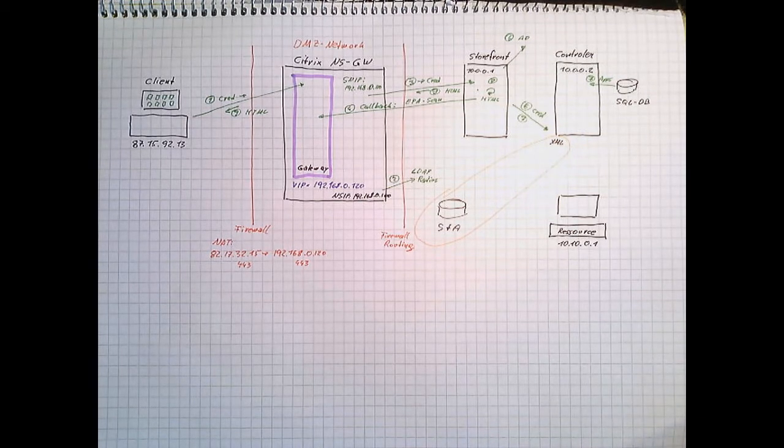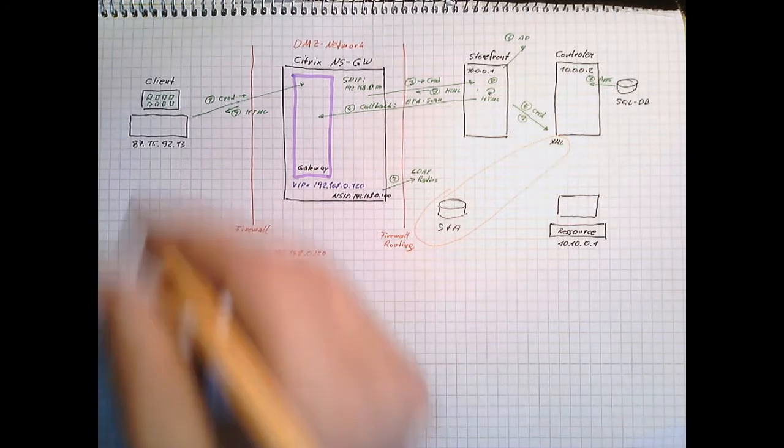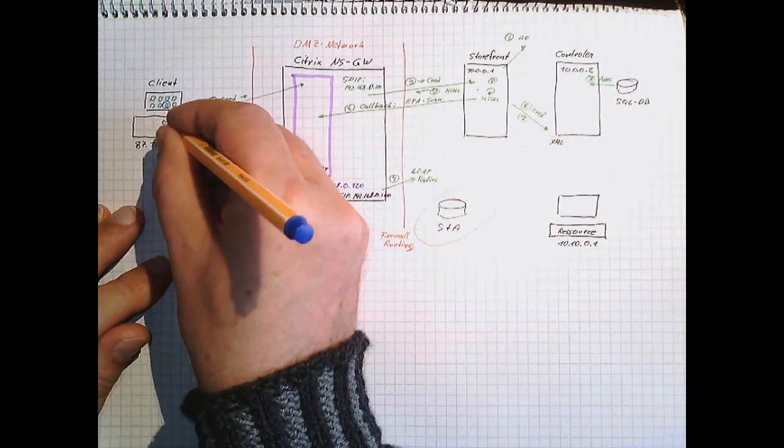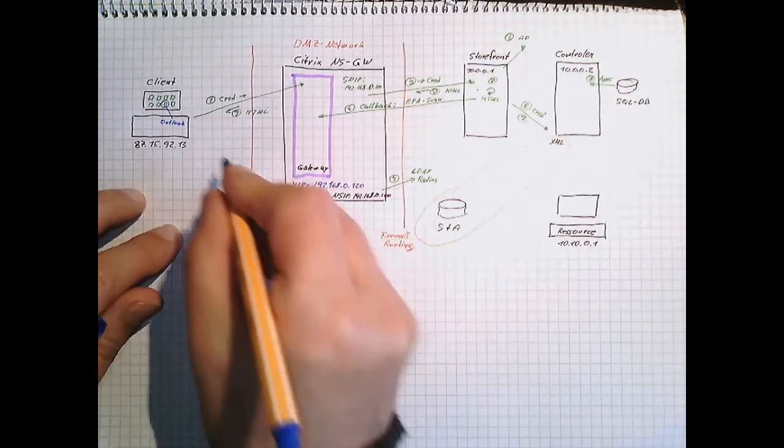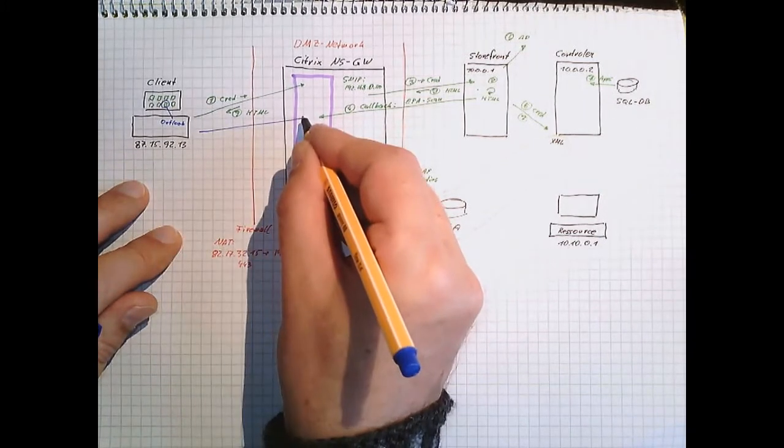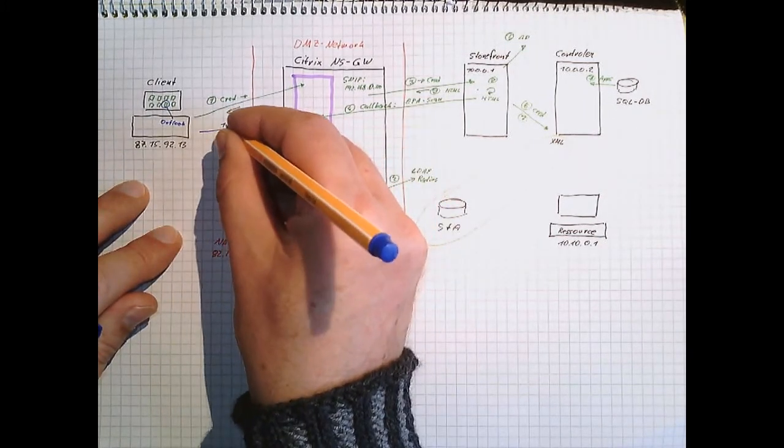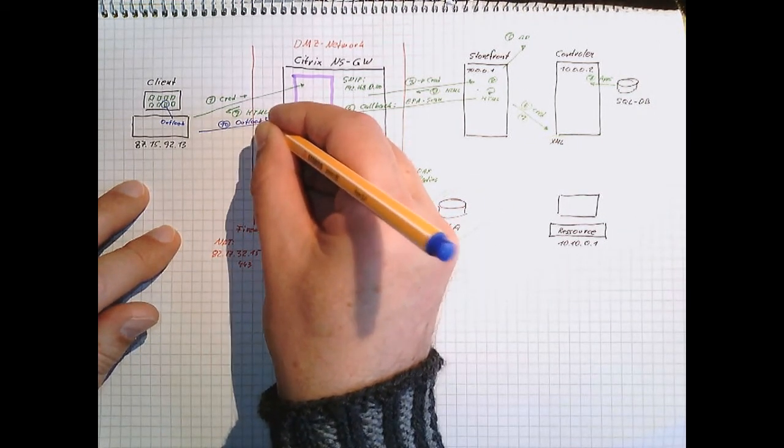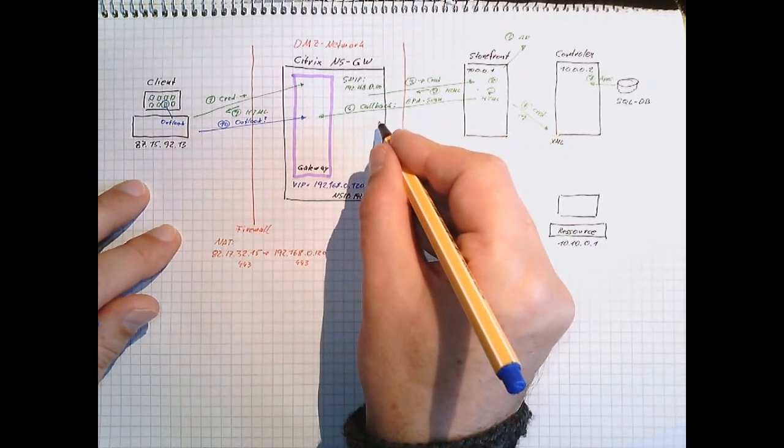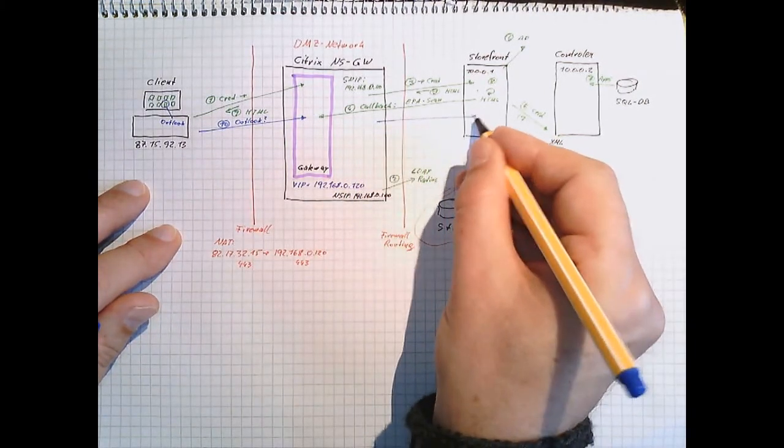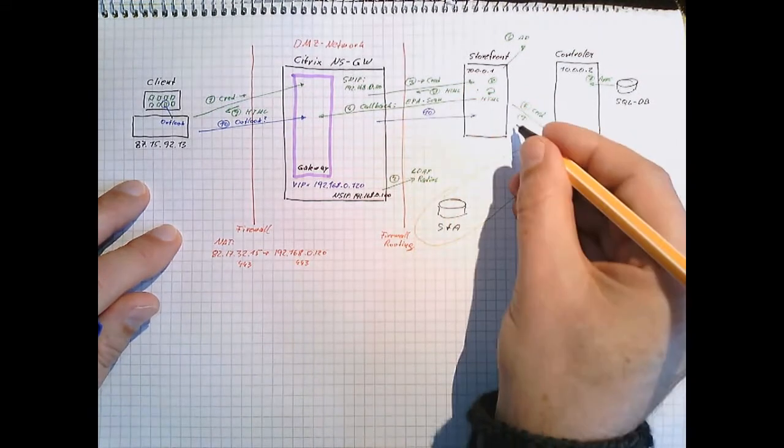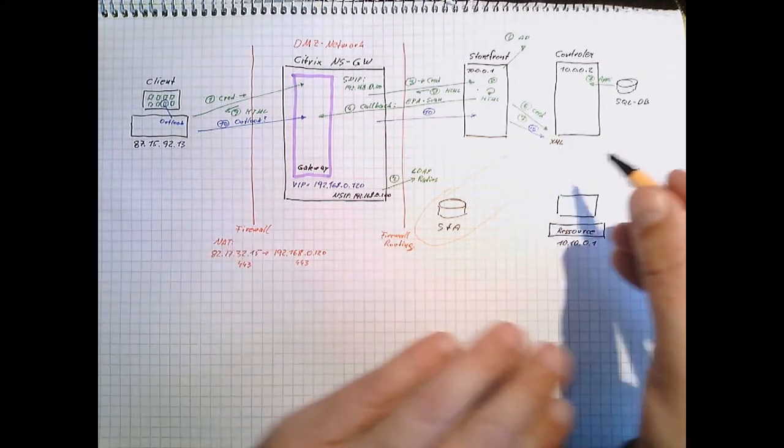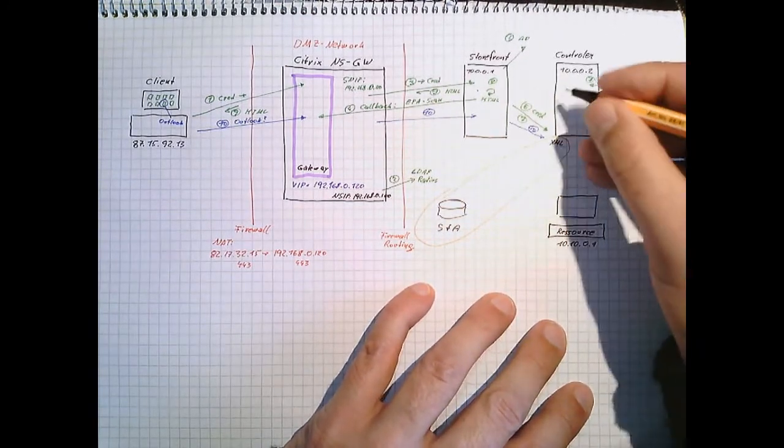Ready for phase two. The user will click one of the applications. I call this application Outlook. And this is forwarded to the NetScaler gateway. So I call this number 10, Outlook. This is forwarded, proxied to Storefront. And Storefront will forward to the XML service. Now the controller has to do load balancing, has to find the least loaded resource.